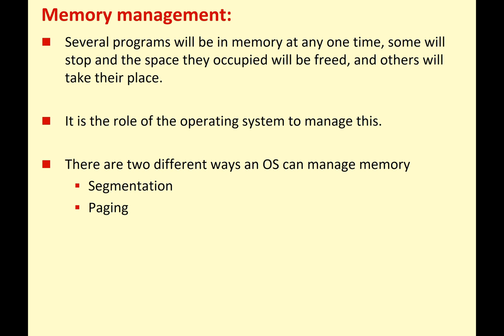Several programs will be resident in memory at one time. Some will stop and the space they occupied will be freed, and others will take their place. You start applications, you finish applications, and that memory space has to be continuously recycled to make sure everything is used efficiently — this is what your operating system is managing. At the GCSE level, you need to know two different ways an operating system can manage memory: segmentation and paging.